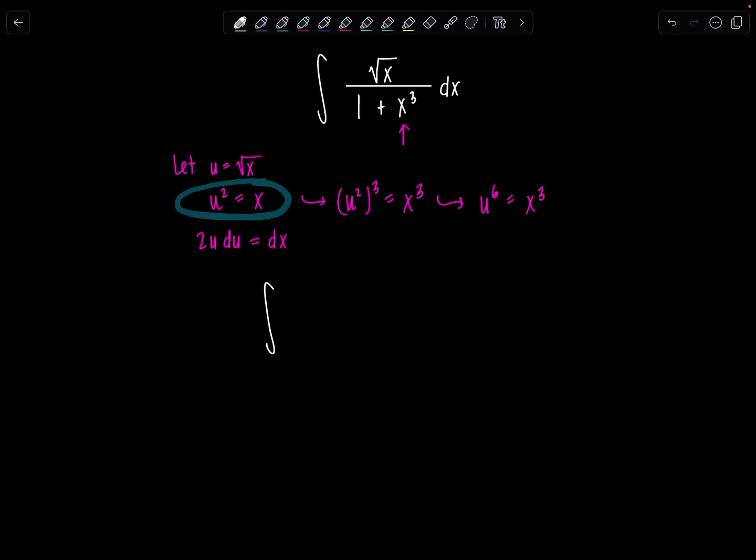So I'm almost ready to rewrite my integrand now, all in terms of u. The only problem is this x cubed down here. So what I want you to do is come look at this line right here where u squared is equal to x. If I cube both sides, u squared cubed is equal to x cubed, which means u to the sixth is x cubed. All right, so now we should be ready to roll. Instead of rad x in the numerator, I just have u. The denominator is going to become 1 plus u to the sixth. And then dx, I'm going to replace with 2u du.